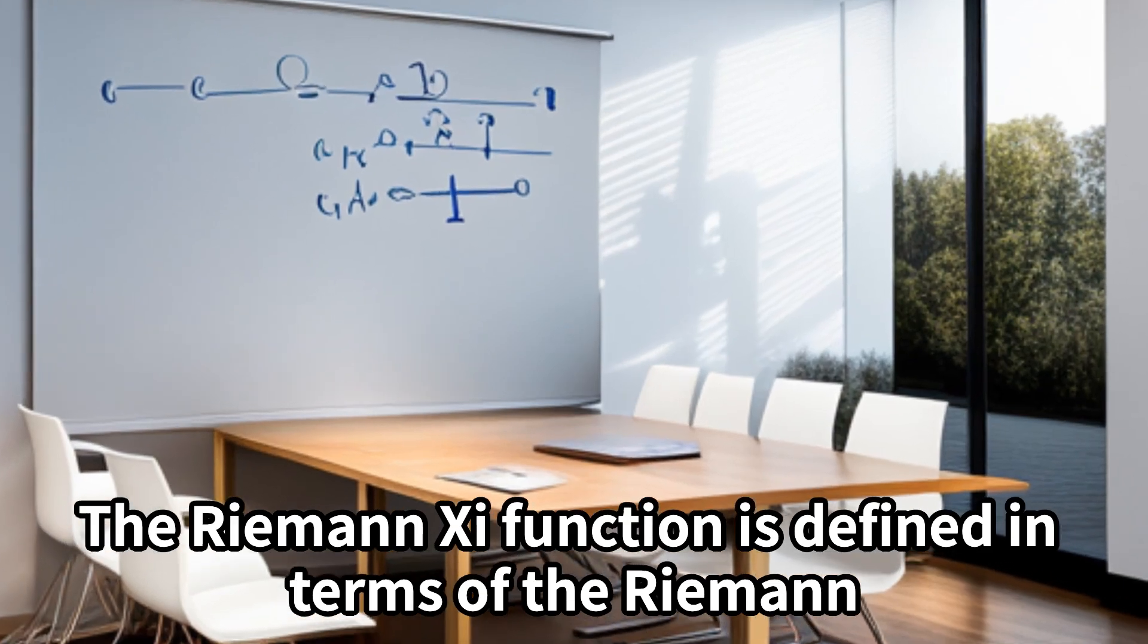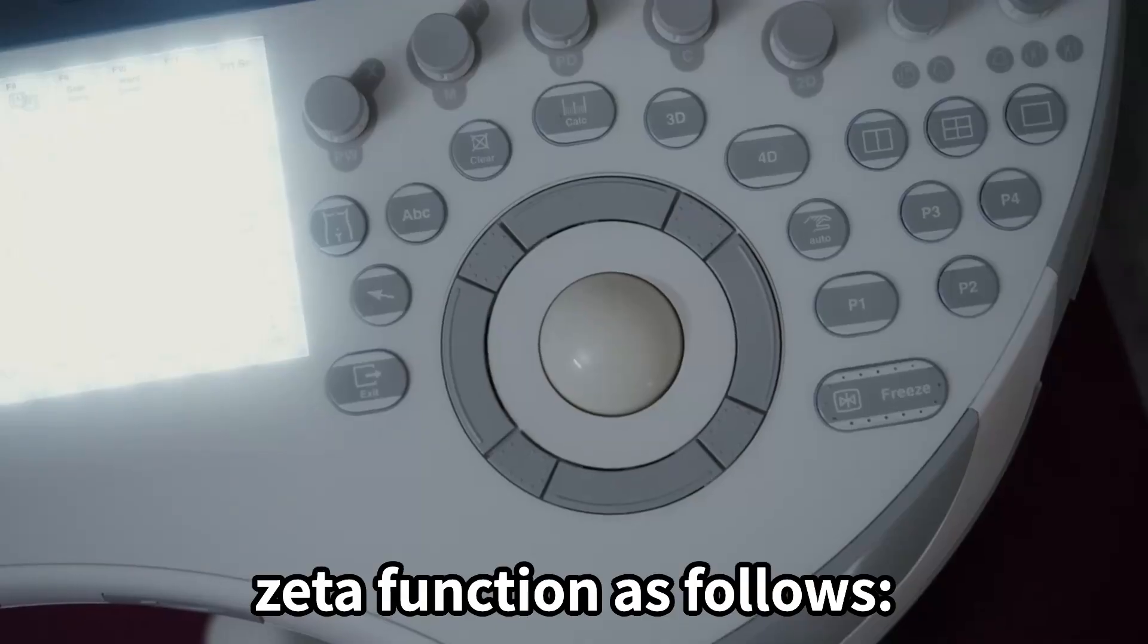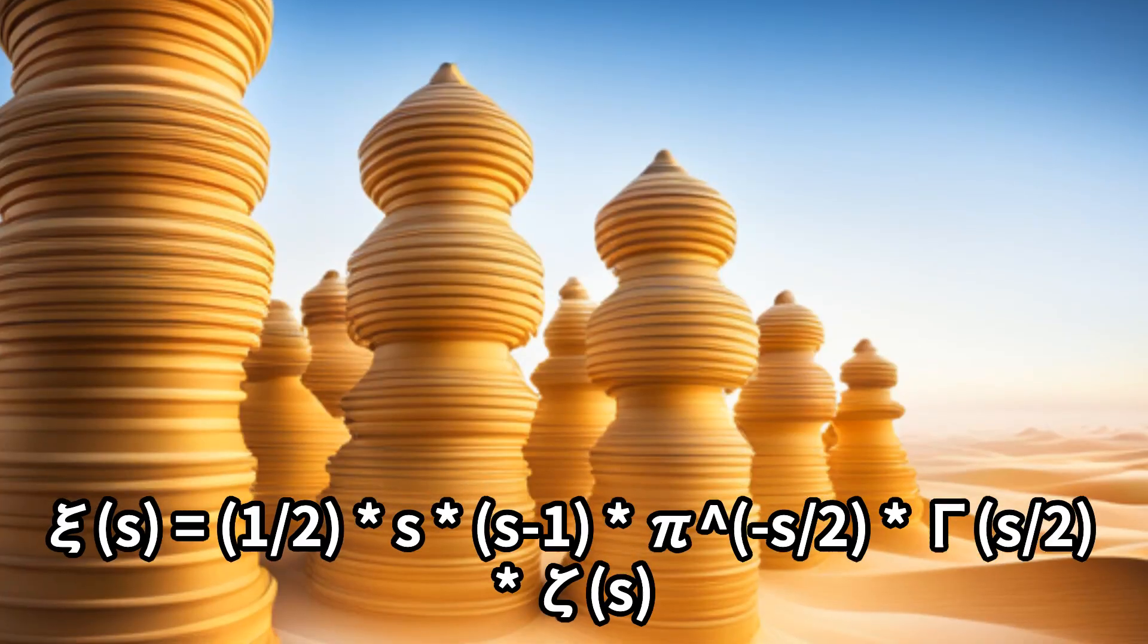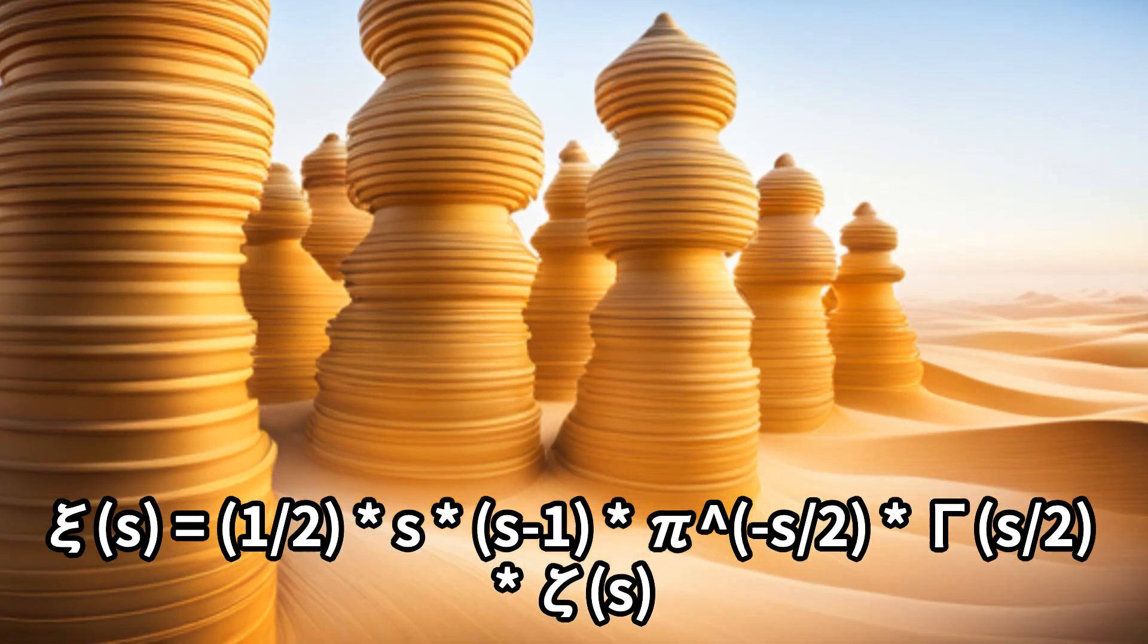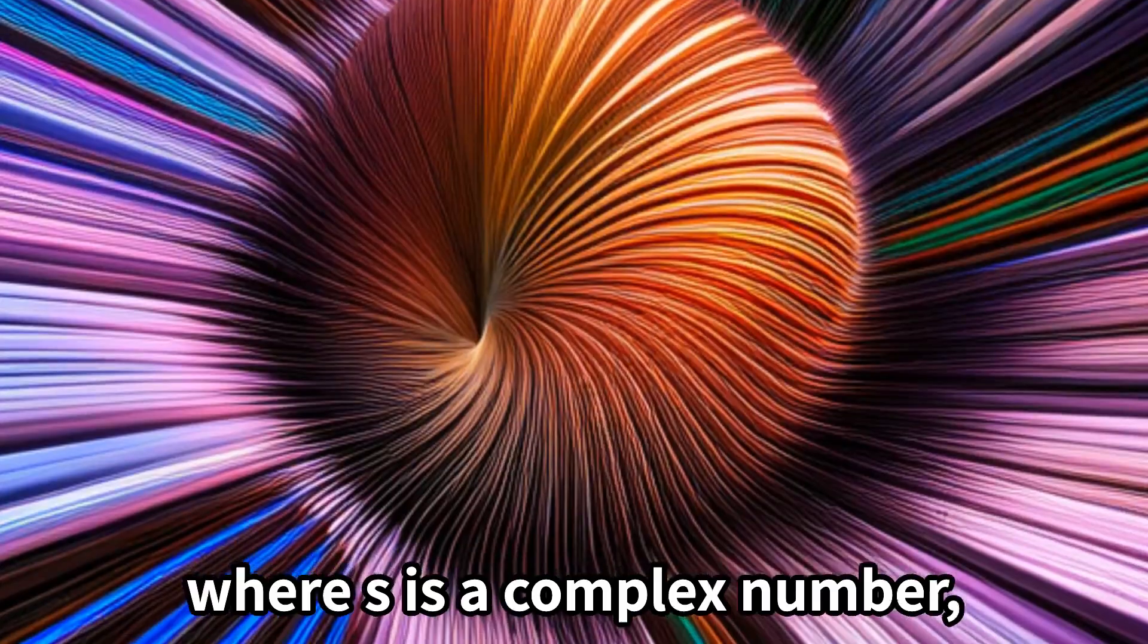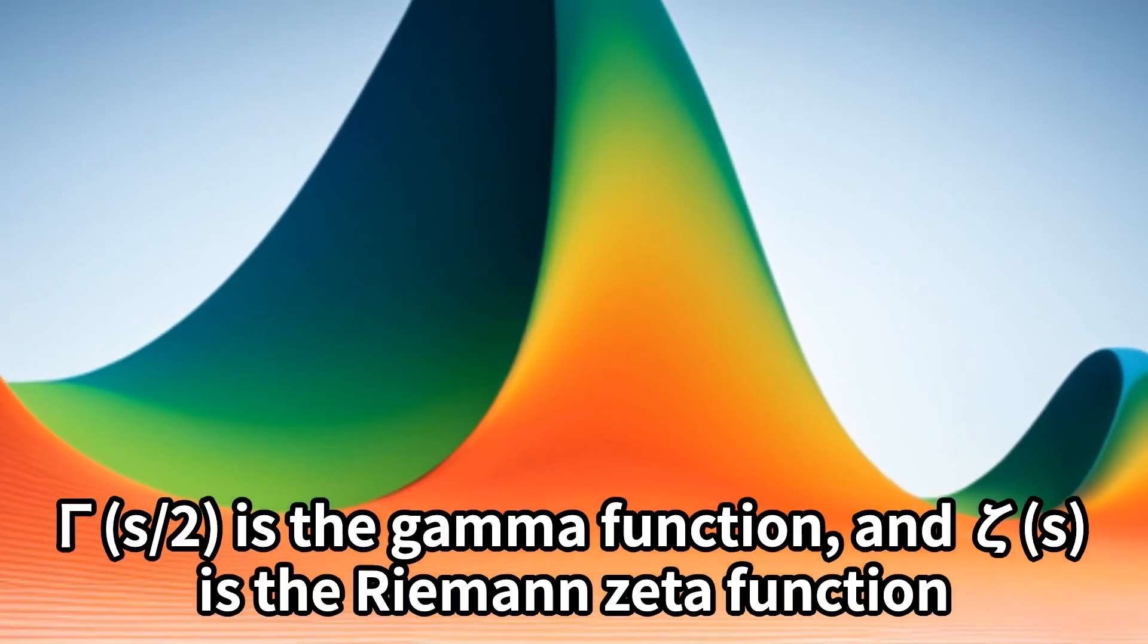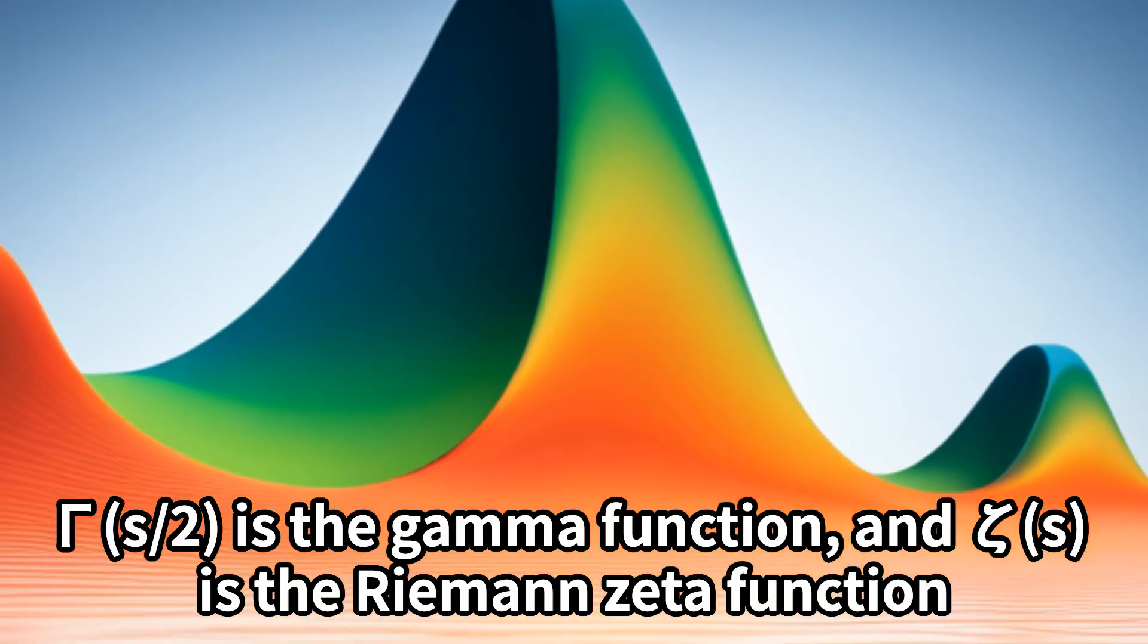The Riemann-Chi function is defined in terms of the Riemann-Zeta function as follows: ξ(s) = (1/2) * s * (s-1) * π^(-s/2) * Γ(s/2) * ζ(s), where s is a complex number. Γ(s/2) is the gamma function and ζ(s) is the Riemann-Zeta function.